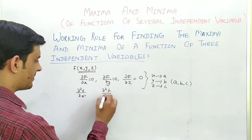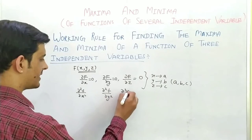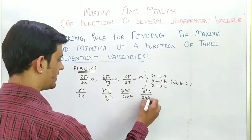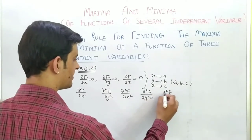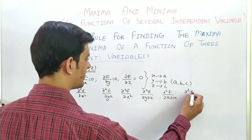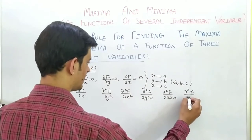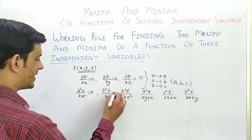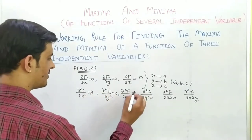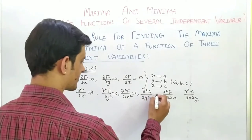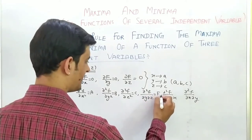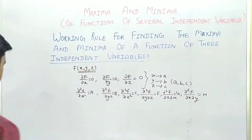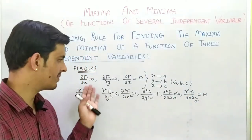Now, from the second-order partial derivatives, we define: A = del² F / del x², B = del² F / del y², C = del² F / del z², F = del² F / del y del z, G = del² F / del z del x, H = del² F / del x del y. These are evaluated at the stationary point (a, b, c).